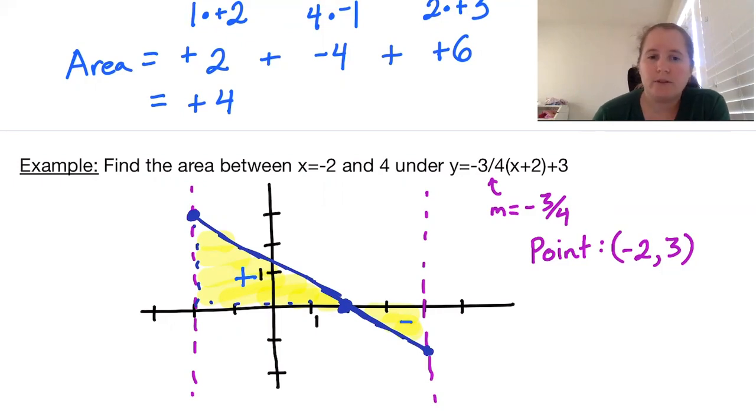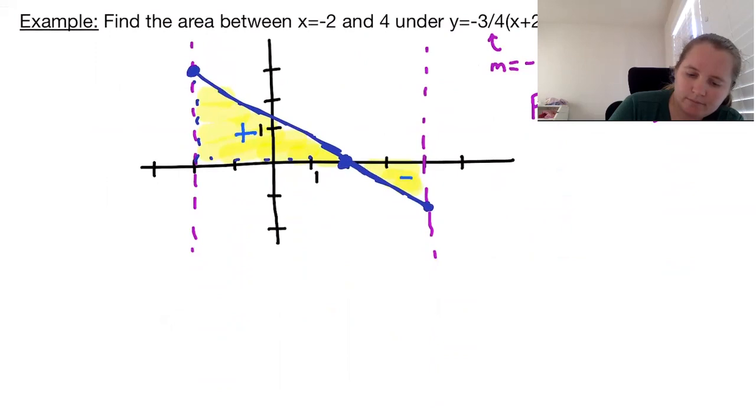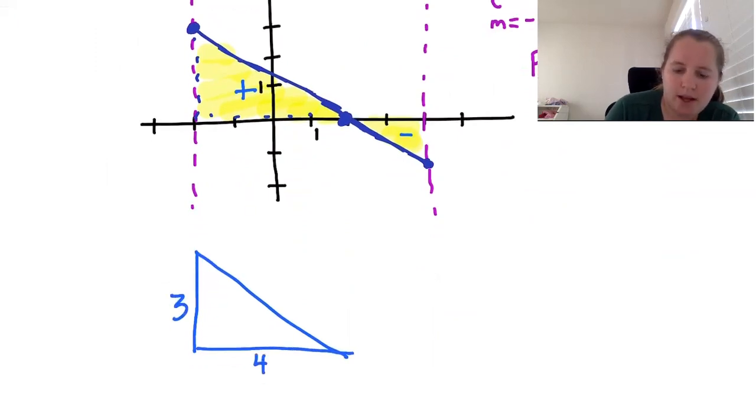We're working with triangles here. So the big triangle had base 4 and height 3, and we are looking at a positive area.